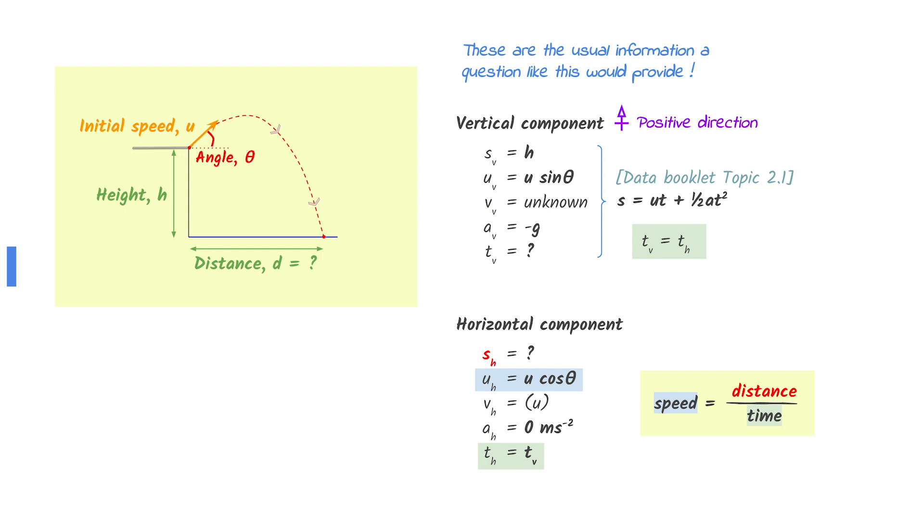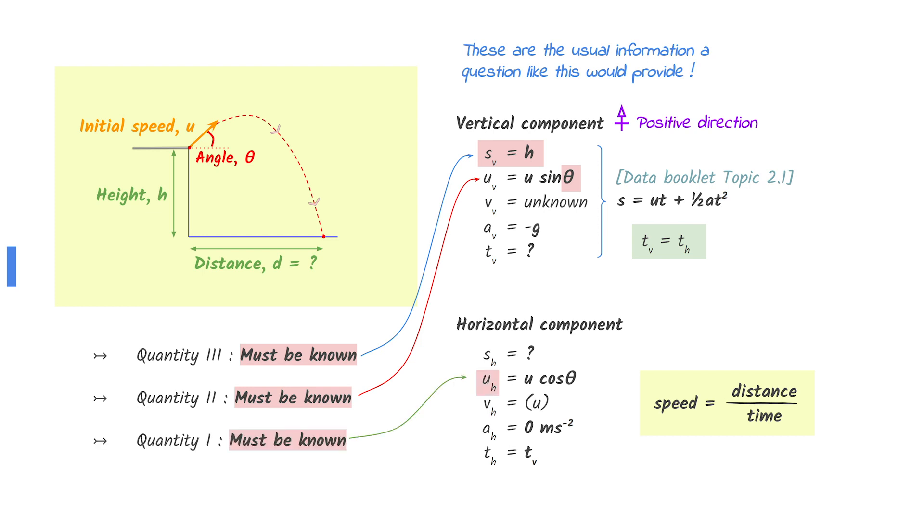To conclude, to determine the horizontal distance, we need to know the height of the cliff, the initial angle between the velocity of the object and the horizontal, and the horizontal component of the initial velocity of the object.